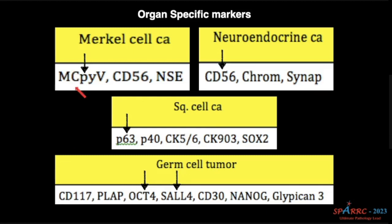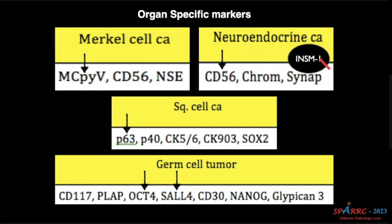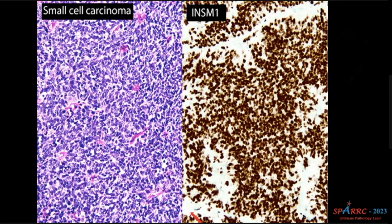Merkel cell carcinoma — Merkel cell polyomavirus. Previously we used to say CK20 dot-like positivity. For neuroendocrine carcinoma, you have to remember INSM1. For squamous cell carcinoma, P40. For germ cell tumors, OCT4 and SAL4 — but we will see a nice table for germ cell tumors in the next slide.